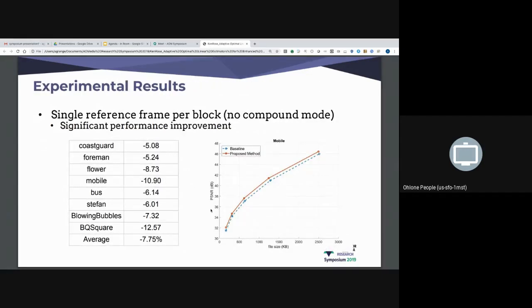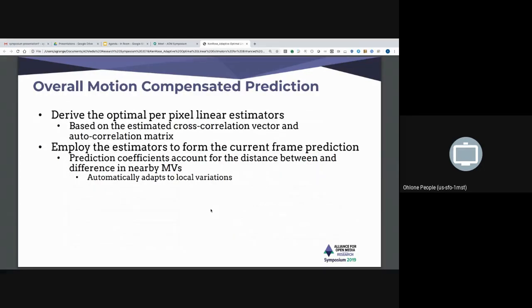And here are some results, and this is where we're at right now, with assuming single reference frame per block, that is, we are disabling the compound mode, for which we have not yet the full solution. And what we see is this performance improvement. It's on the average about eight percent BD rate reduction on a bunch of sequences, as you can see. On the right is basically PSNR versus file size, basically PSNR versus rate. For one of the sequences, not one of the more modest gain sequences, I think it's bus. So this gives pretty big gains.